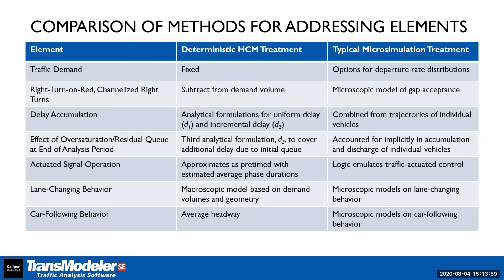Right turns on red are certainly incorporated in simulation models. The way that delay at an intersection is computed is done differently in the HCM — there are three different terms, including one that deals with over-saturation where demand gets carried over to the next analysis period. For actuated signal control in the HCM, you may put in a minimum and maximum green time, but the method converts that to an average phase duration and treats it as though it were a pre-timed phase.